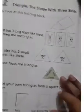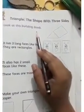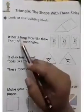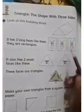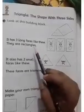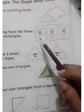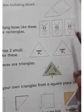Now let's move to the last page — the triangle, the shape with three sides. Look at this building block. It has three long faces like these — they are rectangles, because two opposite sides are equal and they are not in a square shape.